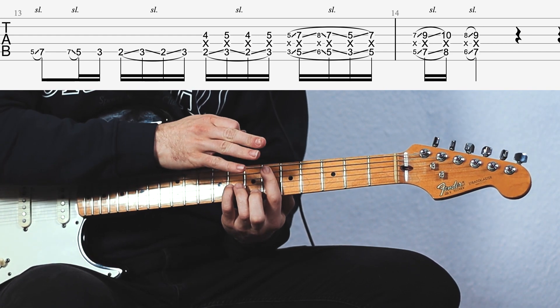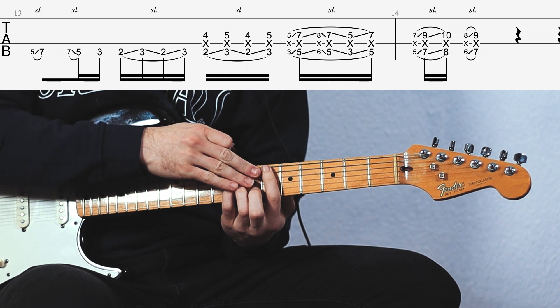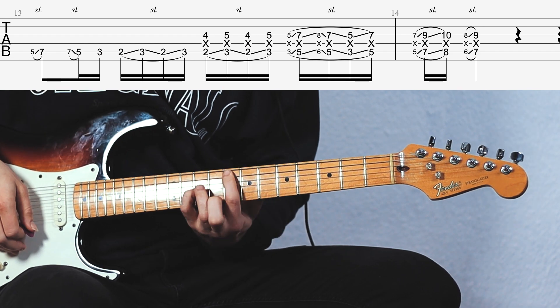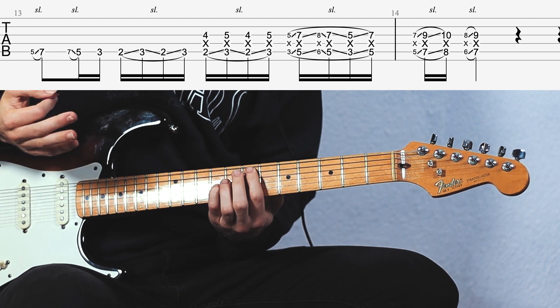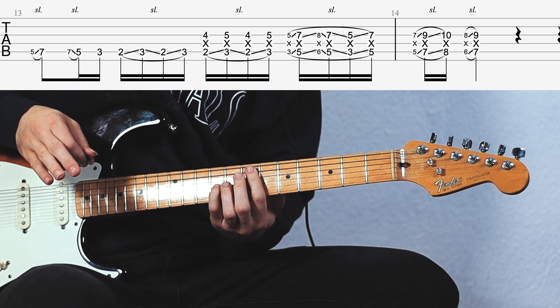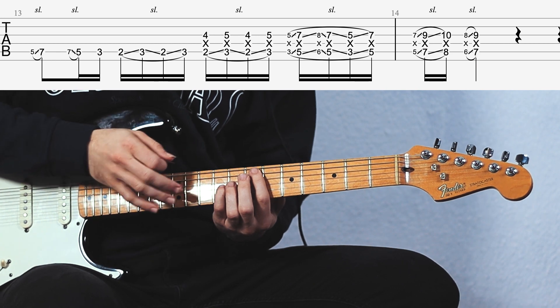And we're gonna slide one fret behind, from one fret behind into the 7th fret and back. Now these are all grace notes, which means you're hearing them for just a very short time. You can't even really distinguish the notes.